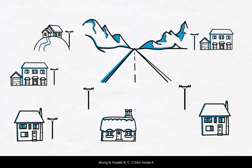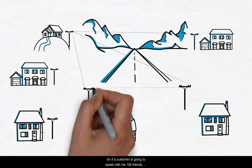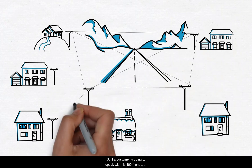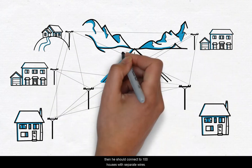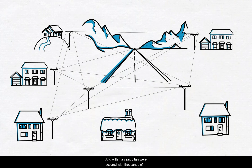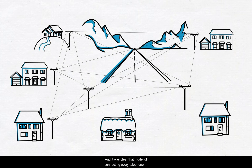C and D, then separate wires had to be strung to houses B, C, and D from house A. So if a customer is going to speak with his hundred friends, then he should connect to a hundred houses with separate wires. And within a year, cities were covered with thousands of wires passing over trees and houses, and it was clear that the model of connecting every telephone with every other telephone would end up in a mess.